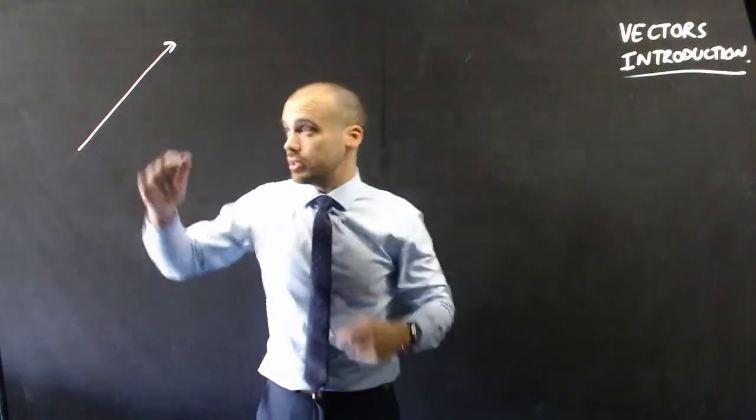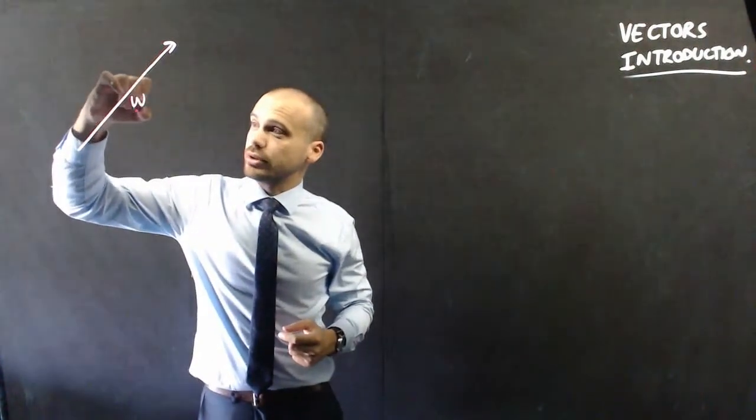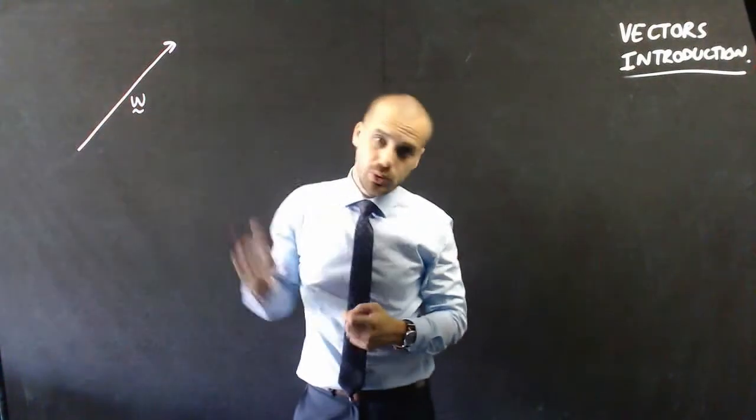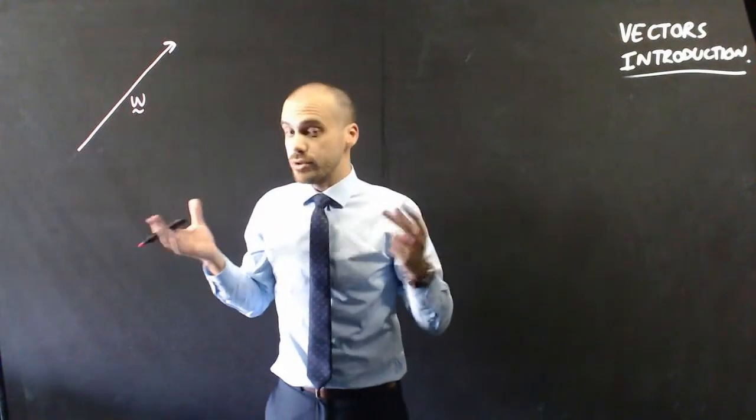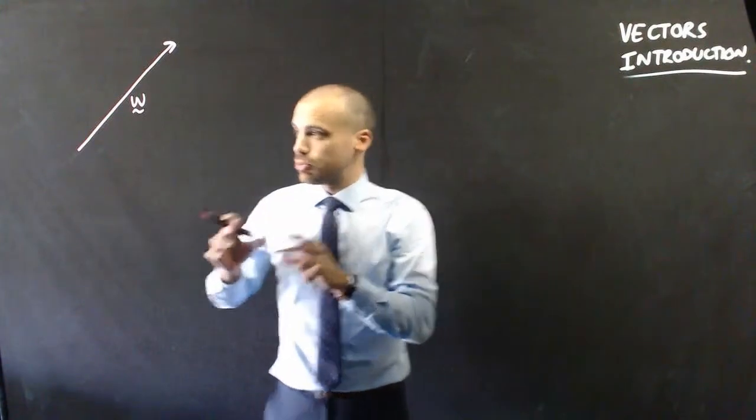So here's our vector. I'm going to call this vector W, and I show that it's a vector by putting a little squiggly line underneath the W. Now, vectors, or arrows, have two distinct properties.